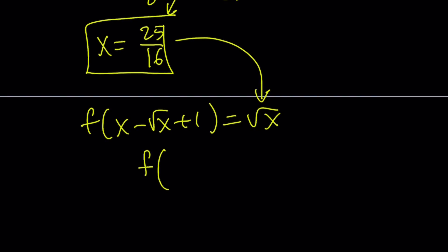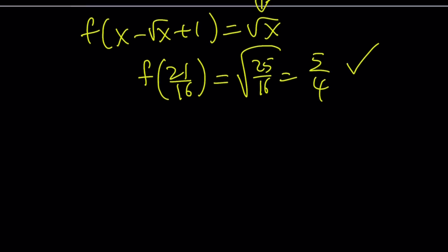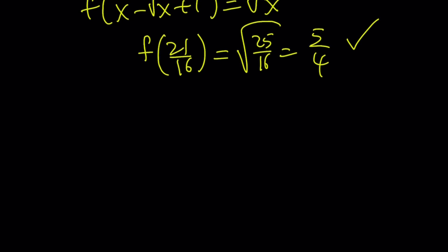So f of 21 over 16 equals square root of 25 over 16, which is 5 fourths. So that checks with the first method, and pretty much that's what it is. Let's go ahead and take a look at the graph and we'll finish up.